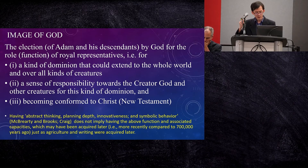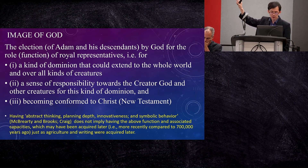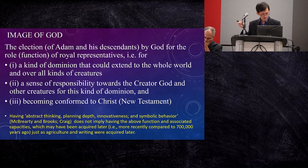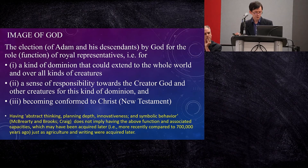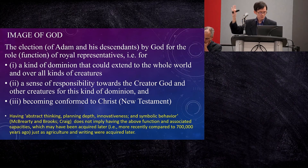Having abstract thinking et cetera does not imply having a kind of dominion that could extend across the whole world, or the capacity to be aware of a creator God and to worship God. So these capacities and functions which I listed about the image of God — which the Bible emphasizes — may have been acquired much later on. It could have been far more recent compared to 700,000 years ago, which Dr. Craig argues for. Just as agriculture and writing were acquired later — agriculture only about 10,000 to 20,000 years ago, and writing only a few thousand years ago — so when we want to understand what a human being means, we need to read the Bible, and the Bible tells us that it is this function that defines a human being. We should go by this definition.